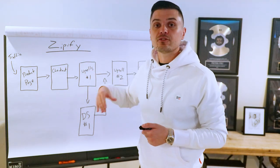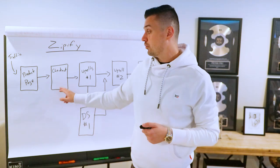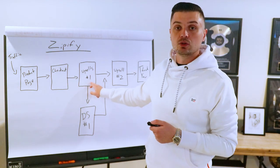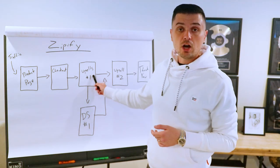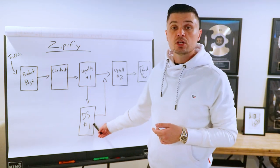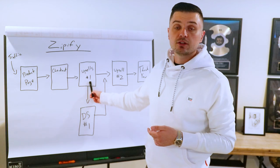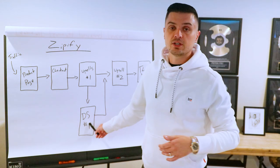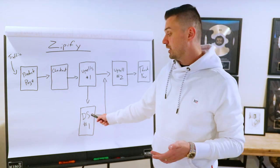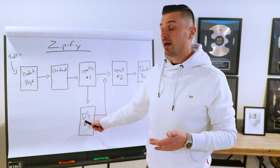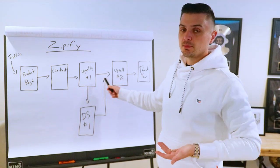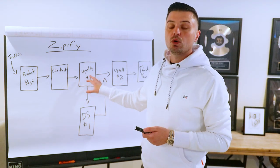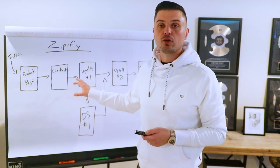These upsells happen after the customer has completed their first initial order — they'll have an option to say yes or no. With Zipify you can have upsells and downsells. For example, if you're charging two for a dollar and they say no, you can give them three for a dollar — you can downsell them. You can also have as many upsells as you want before they finally hit the thank you page.